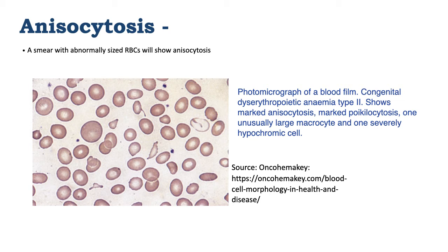Anisocytosis is a case where we get red blood cells of different sizes occurring in the same blood smear. Looking here, we are seeing large red blood cells and small red blood cells — different sizes all in the same smear. In addition, we are also getting red blood cells of different shapes occurring in this smear, so we can also say there is poikilocytosis.